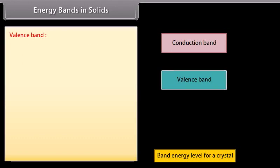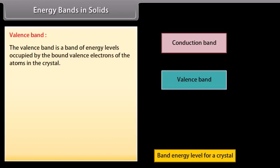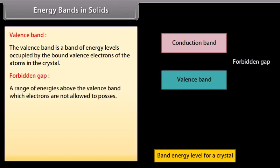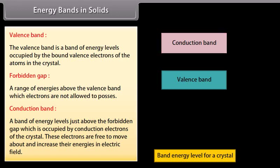Valence band: the valence band is a band of energy levels occupied by the bond-valence electrons of the atoms in the crystal. Forbidden gap: a range of energies above the valence band which electrons are not allowed to possess. Conduction band: a band of energy levels just above the forbidden gap, occupied by conduction electrons of the crystal. These electrons are free to move about and increase their energies in an electric field.